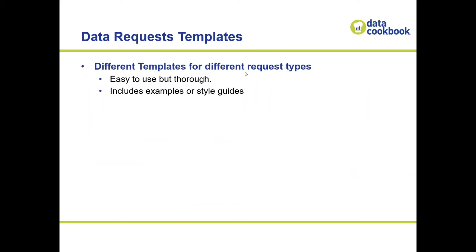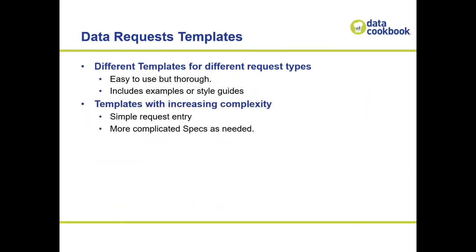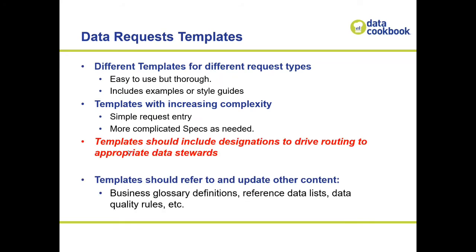Having different templates for different types of requests is helpful. The key point is that if you're intaking requests in a somewhat formal way, you can take those templates and include designations to drive routing to the appropriate data stewards. Having functional areas, data systems, and other attributes can drive towards which steward is involved. Otherwise, if you're just taking a phone call — 'I need a report about retention rate for my students with X, Y, and Z' — you're not classifying what area that's in, what system it's in, and how it gets routed to the appropriate steward.